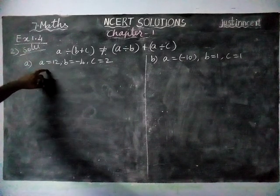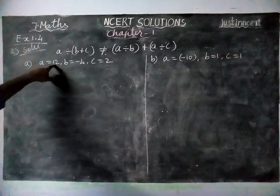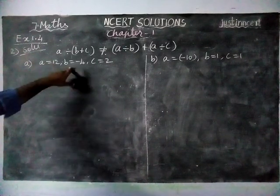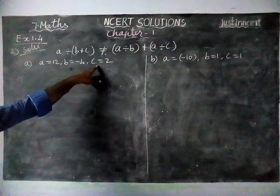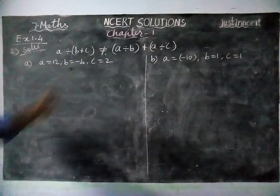Here A value is equal to 12, B value is equal to minus 4, C value is equal to 2.